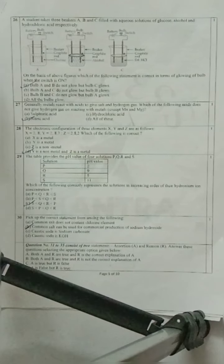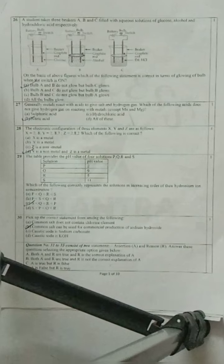Question 30: Pick up the correct statement from among the following. Option A says common salt does not contain chlorine element. Option B says common salt can be used for commercial production of sodium hydroxide. So option B is the correct option where common salt can be used for commercial production of sodium hydroxide.